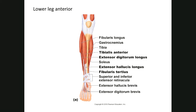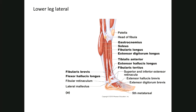On the anterior part of the tibia we have one conveniently called tibialis anterior, and there is extensor digitorum longus. Here is your gastrocnemius — it goes down into the calcaneal tendon and inserts on the calcaneus.